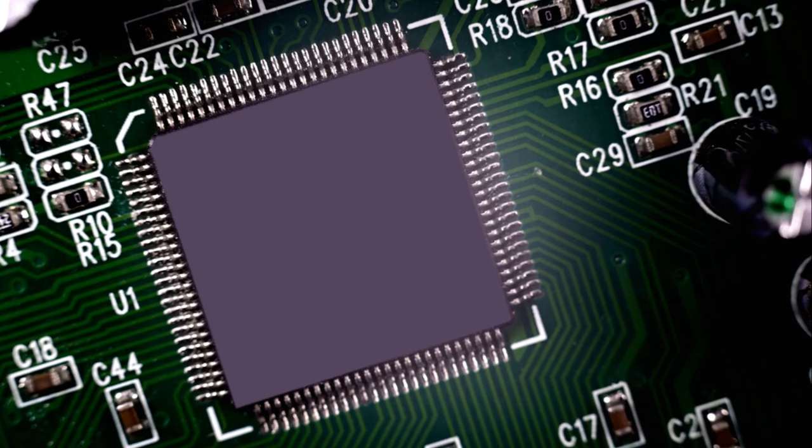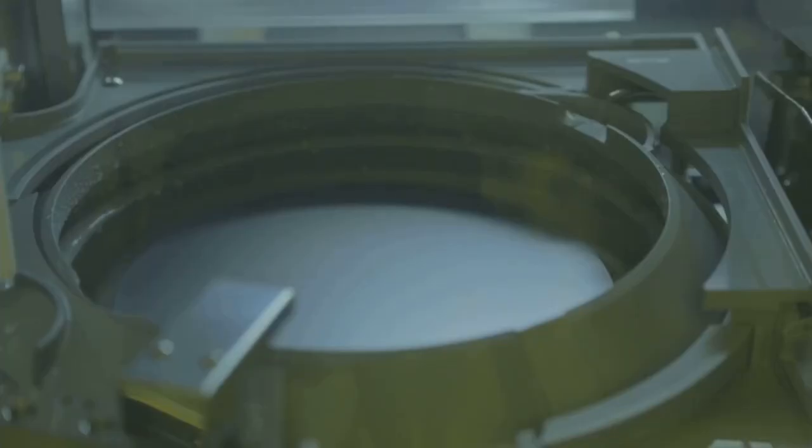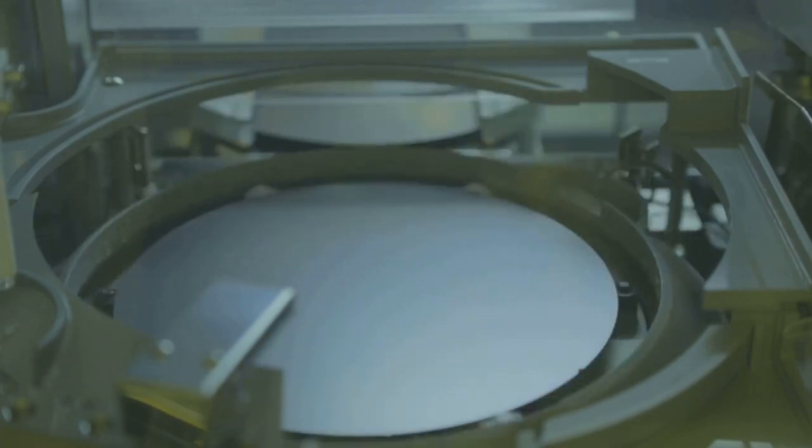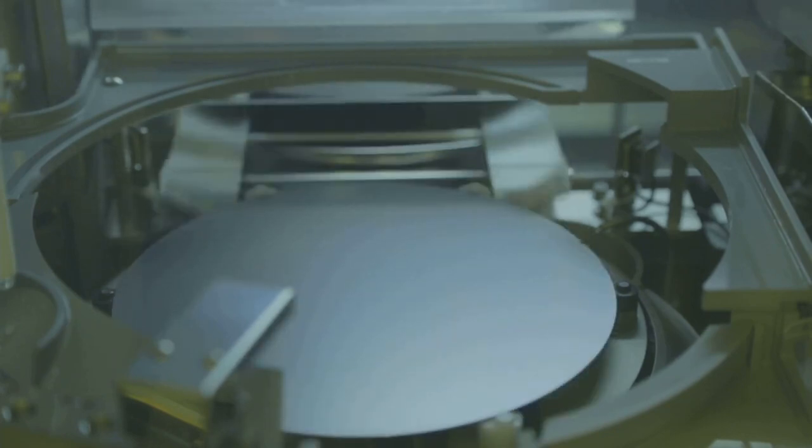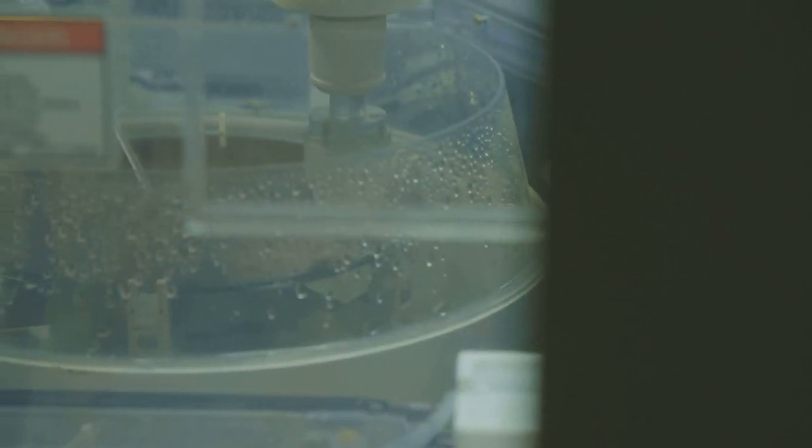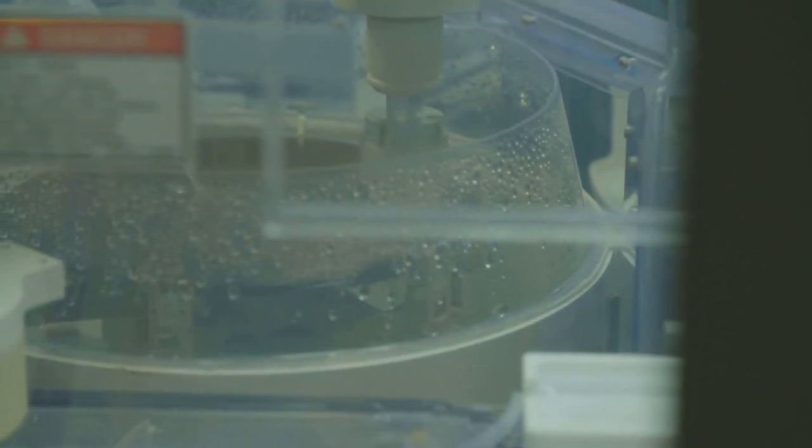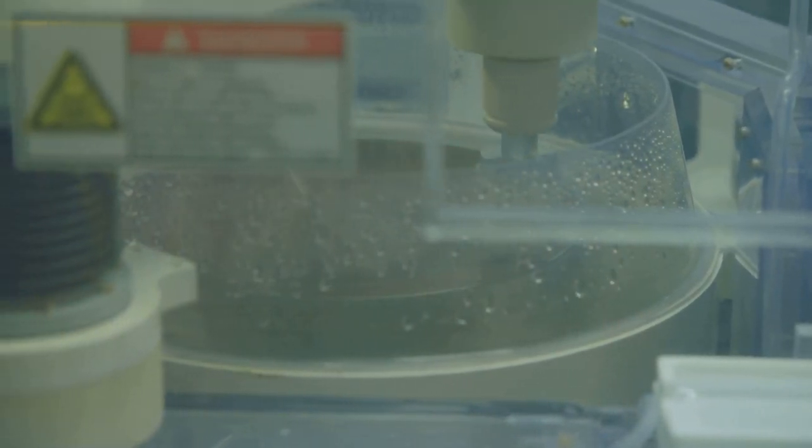The process begins with photolithography, a technique that uses light to transfer a pattern onto a silicon wafer. Think of it as painting intricate patterns on a canvas, but at a microscopic level. Next, we have doping, where impurities are intentionally added to the silicon to modify its properties. It's akin to adding spices to a dish to enhance its flavor.